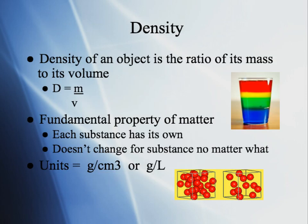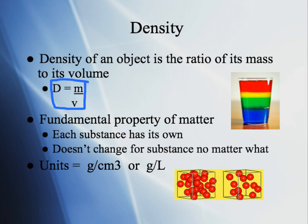Our last topic is density. Density is the ratio of an object's mass to its volume — mass divided by volume. It is a fundamental property of matter; each substance has its own unique density. We can actually identify unknown substances using their density — measure the mass, measure the volume, divide the two, and look it up to determine what the material is.